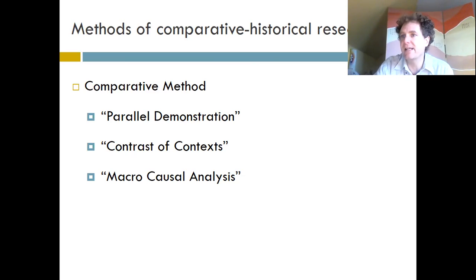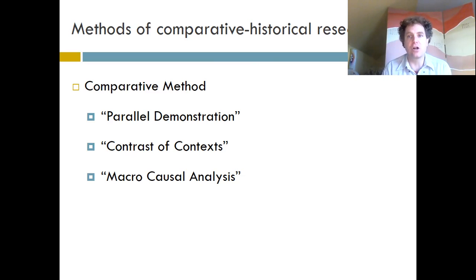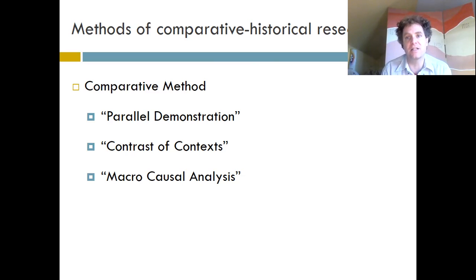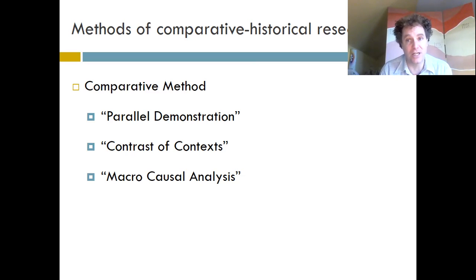The first method is, not surprisingly, called the comparative method. Comparative historical research is really based on comparisons. What that essentially means is you're going to have a number of different cases — like different countries — and compare those countries with each other. You take America, Japan, China, and many other countries and ask: how can we explain the differences or similarities between them? Their different histories will explain why these countries are different or the same.